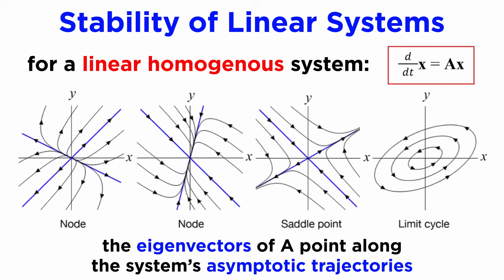When sketching a phase plane, it is often useful to draw the eigenvectors of A, if they are real, as straight lines which are shown in blue on these diagrams, as these will act as asymptotic trajectories that divide the plane up into regions that behave similarly.